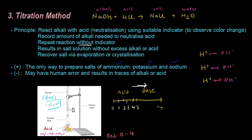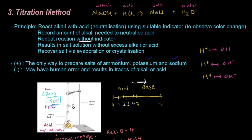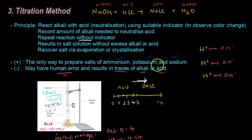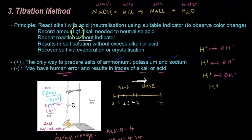The disadvantage is human error. You may think you need exactly 15 cm³, but it could actually be 14.9 or 15.1 cm³. Although you see the color change from red to yellow, the change might happen slightly before or after the true neutralization point. This means there will be traces of excess alkali or acid — extra H⁺ floating around in the salt and water solution — which is not what we want.